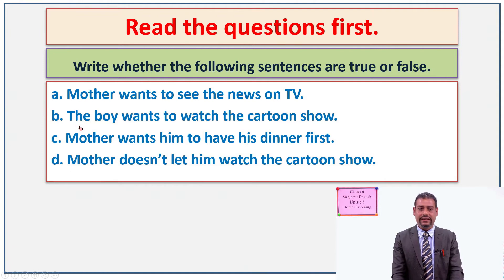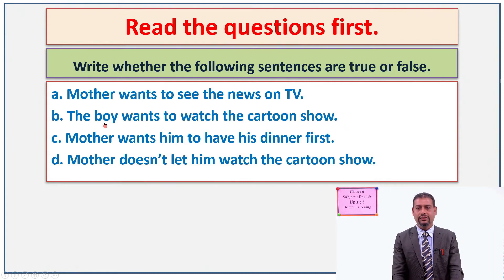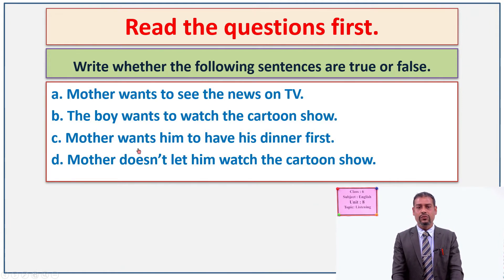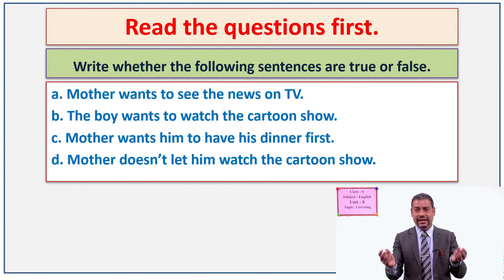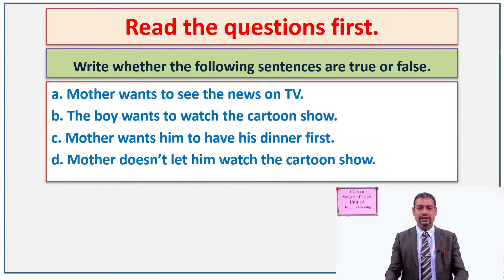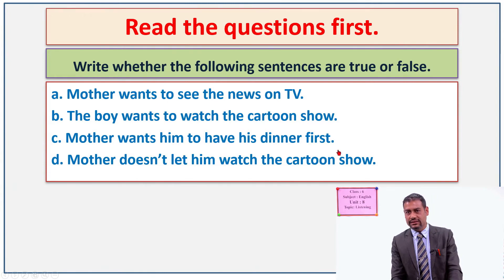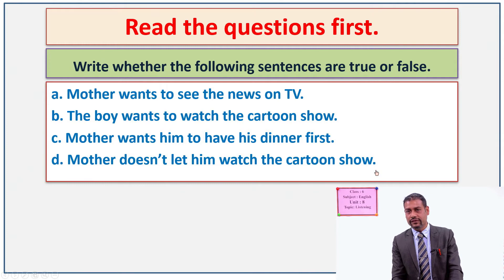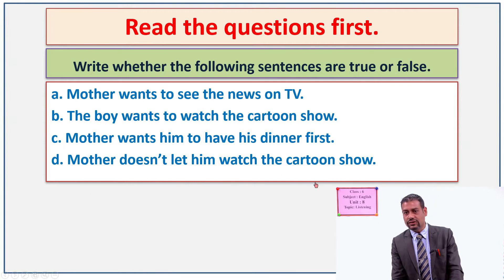The second sentence is: 'The boy wants to watch the cartoon show.' The third sentence is: 'Mother wants him to have his dinner first.' And the last sentence is: 'Mother does not let him watch the cartoon show.' You have to write true or false for each of these sentences.